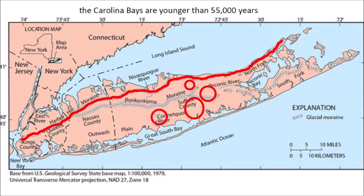We now come back to the map with the locations of the Carolina Bays and we notice that the bays overlay the Ronconcoma Moraine that was emplaced about 55,000 years ago. From the geological law of superposition, this means that if all the Carolina Bays were emplaced contemporaneously, they are younger than 55,000 years.